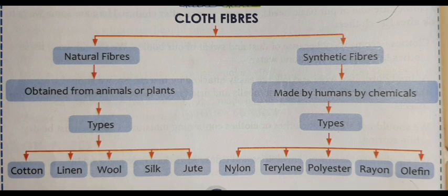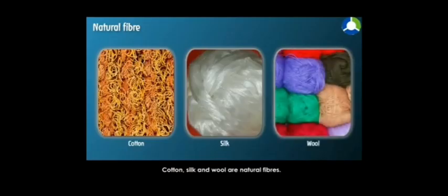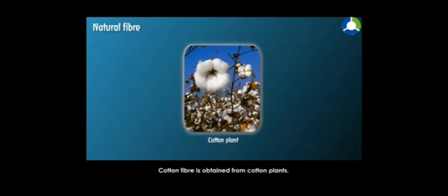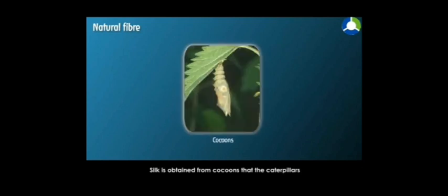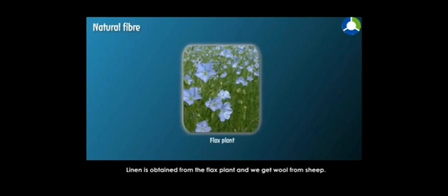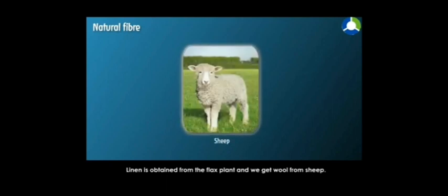Natural fibers are the fibers obtained from plants and animals. For example, we obtain cotton from the cotton plant and silk from the cocoon that the caterpillar of the silk worm weaves around itself — from that cocoon we get silk. Linen is obtained from the flax plant and we also get wool from the sheep.